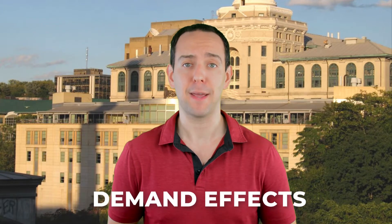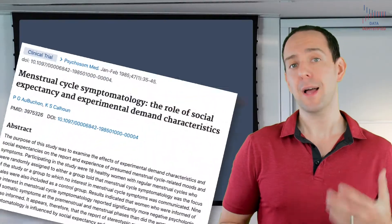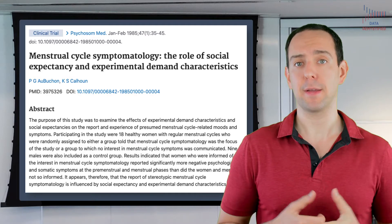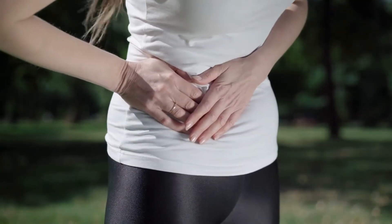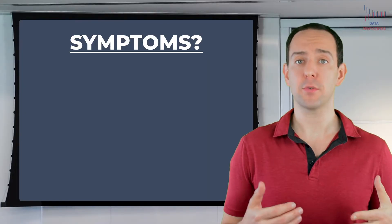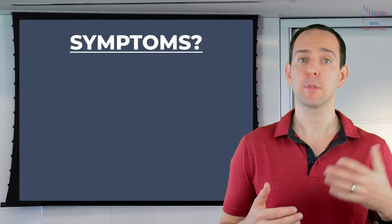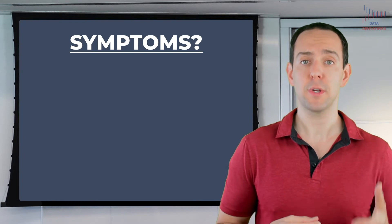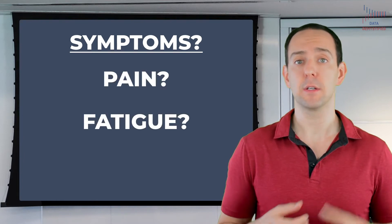Let's get right into our fifth way in which science can go wrong: demand effects. This one is particularly problematic with any findings where you're dealing with people. A classic example of this problem was looked at back in the 1980s. Researchers were interested in how women reported menstrual symptoms, and so a pretty straightforward way to test this was to just ask them. They asked women who were menstruating whether they were exhibiting any of the most common symptoms associated with menstruation, like pain, fatigue, or headaches.